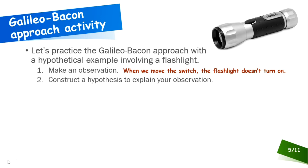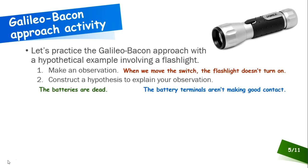I'm pausing here because I want you to actually construct a hypothesis. Why would the flashlight not turn on? I'm guessing many of you actually said the batteries are dead — this is why the flashlight doesn't turn on. That's potentially a legitimate explanation for why the flashlight doesn't turn on, but it's not the only possible explanation. Perhaps you said that the battery terminals aren't making good contact. If you don't have a complete circuit, the light's not going to turn on. This is another potential possibility for why the flashlight's not going to turn on when we move the switch.